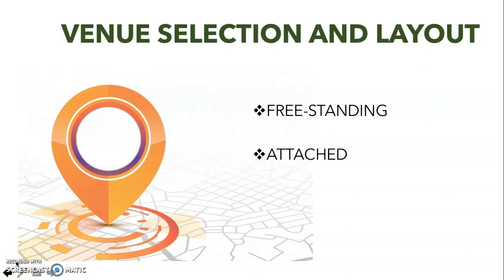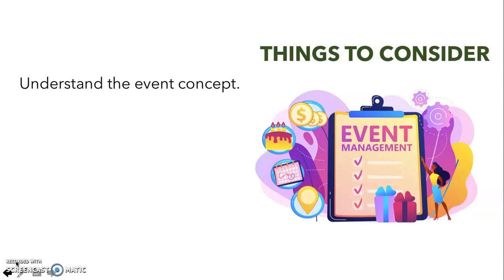Number one: understand the event concept and how it influences the venue. Understand its objectives — the venue must help achieve these. For example, if your event will have a cotillion or social dancing, you can't just choose a venue that has very limited movement. You have to choose a venue that has a dance floor.